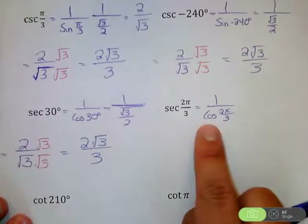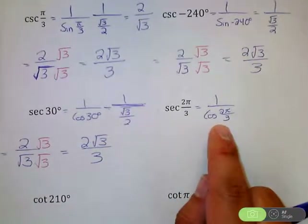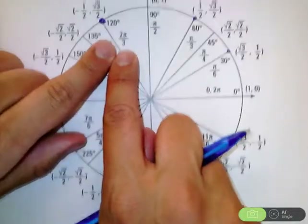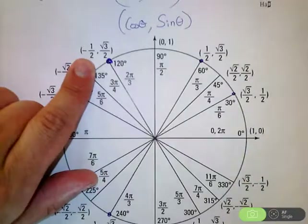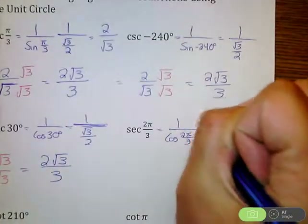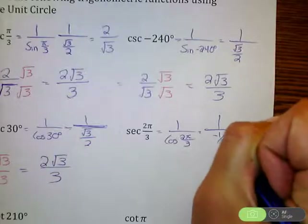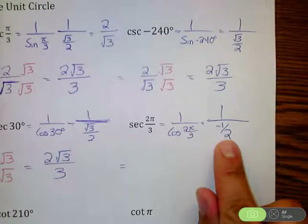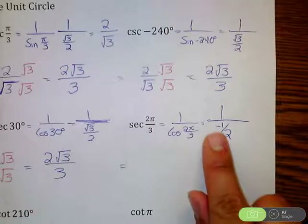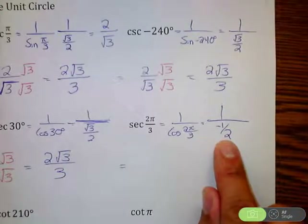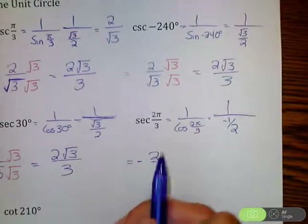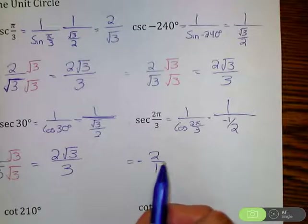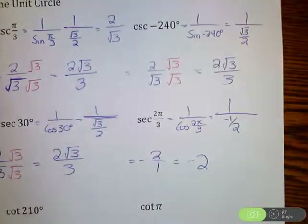For secant of two pi over three, we're finding one divided by cosine of two pi over three. Finding two pi over three on the unit circle, we want cosine, so we're going to use negative one over two. This equals one divided by negative one over two. Taking the reciprocal — flip it — and you get negative two over one, which simplifies to negative two.